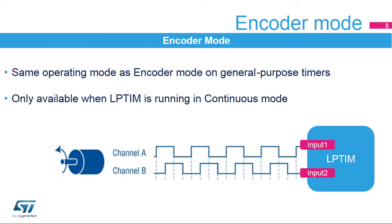The low-power timer features an encoder mode function that can interface with incremental quadrature encoder sensors using the peripheral's input 1 and input 2 inputs. Both inputs feature glitch-filtering circuitry. The encoder function is similar to the one embedded in general-purpose timers. In order to use the encoder mode function, the low-power timer must be running in continuous mode. Notably, only low-power timers 1 and 2 embed the encoder mode function.